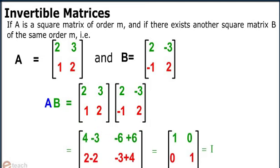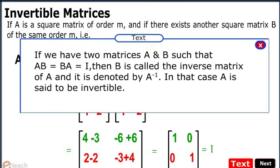If we have two matrices A and B such that AB equals BA equals I, then B is called the inverse matrix of A and it is denoted by A inverse. In that case, A is said to be invertible.